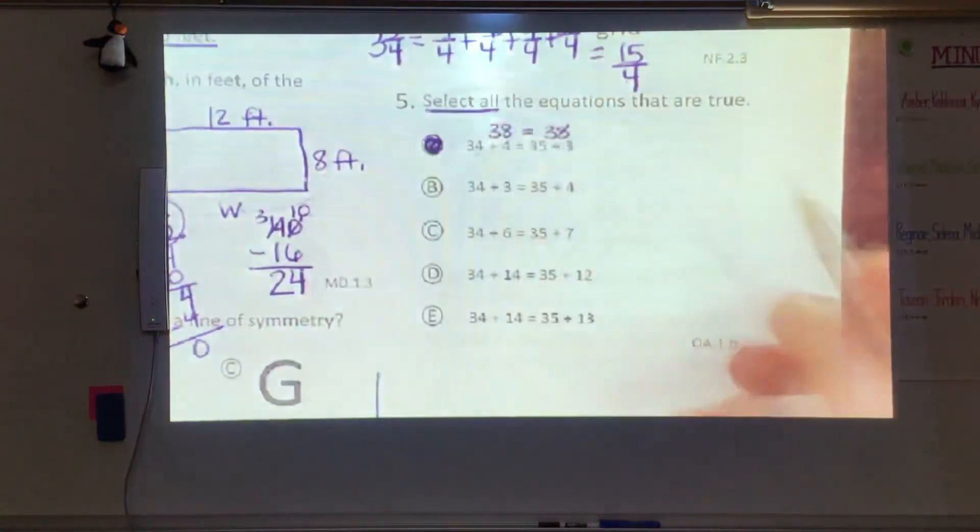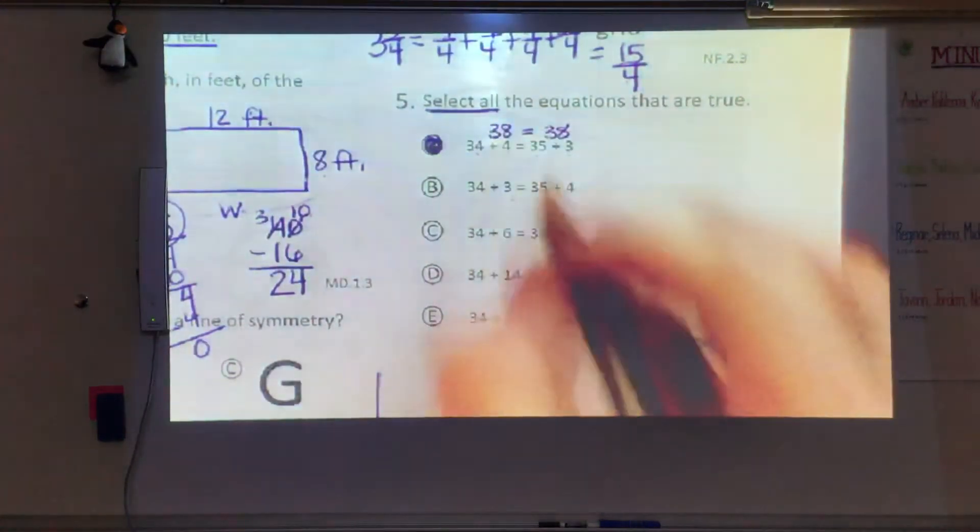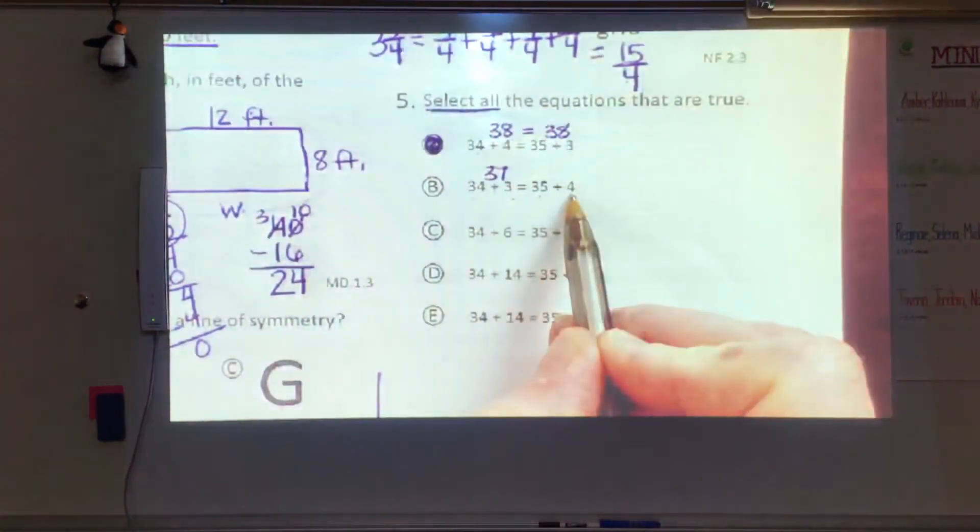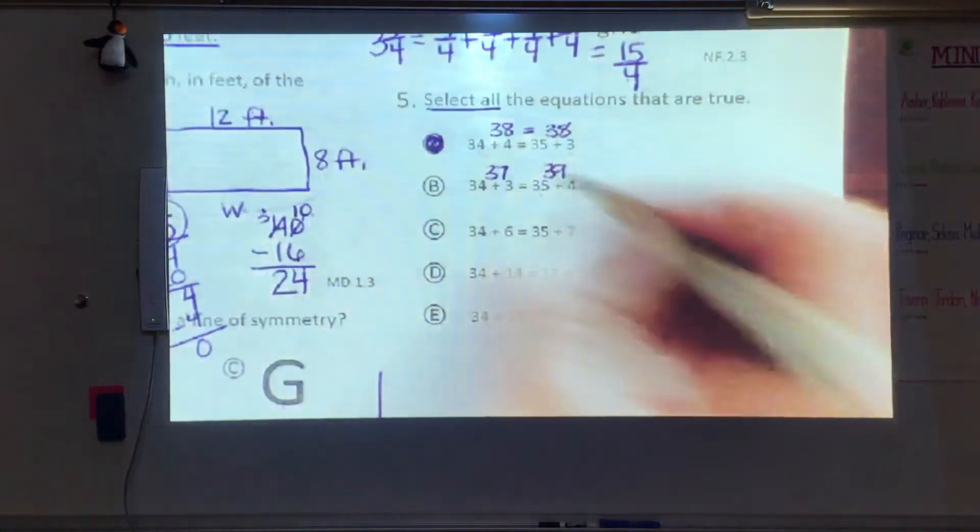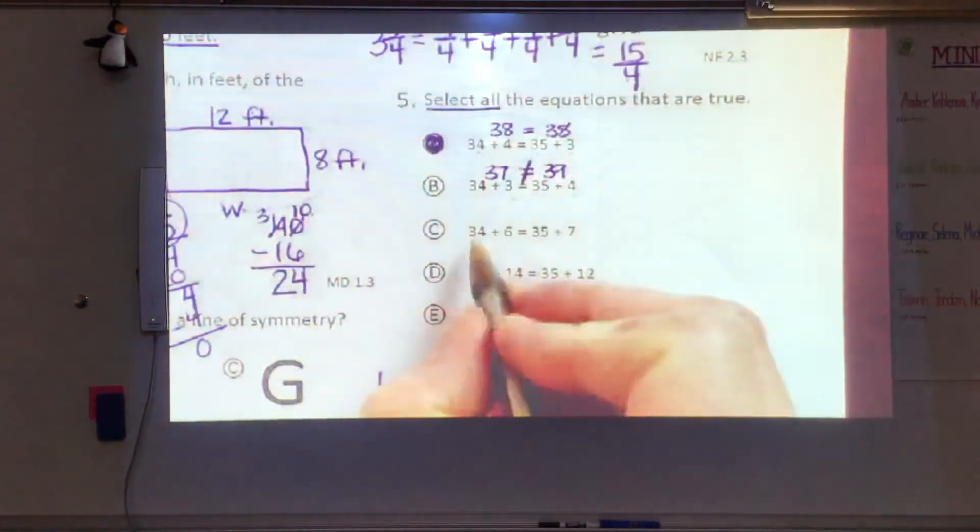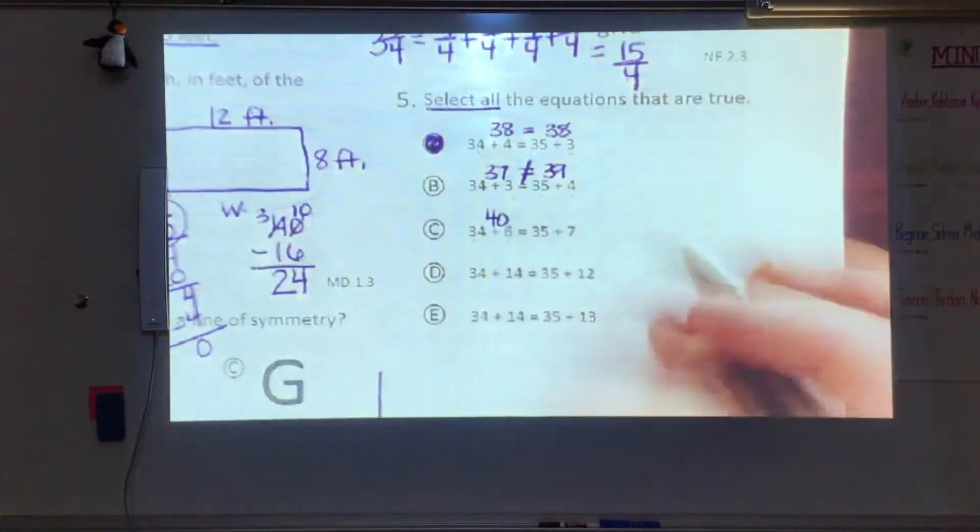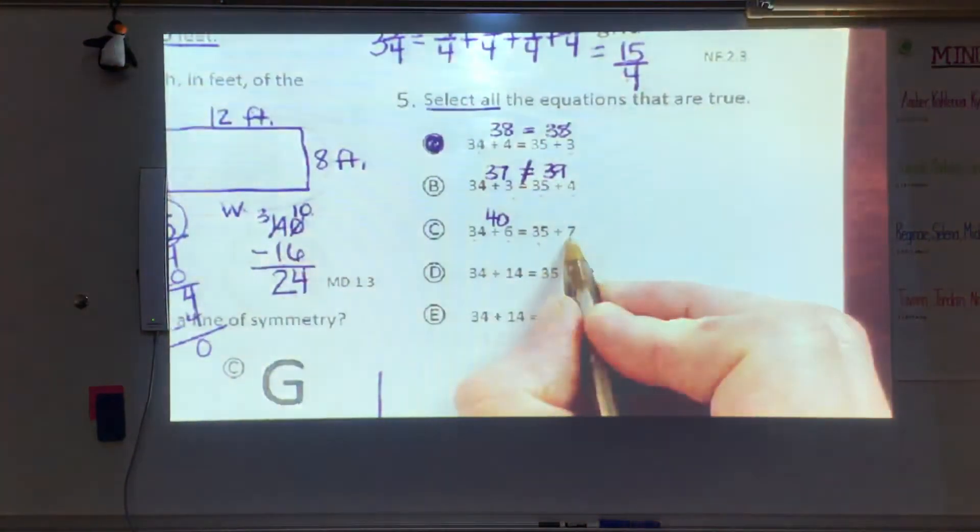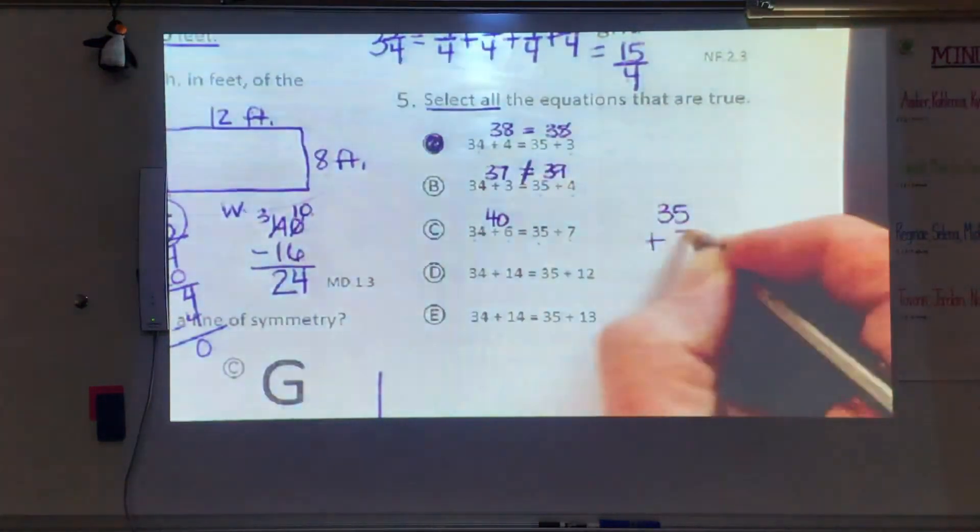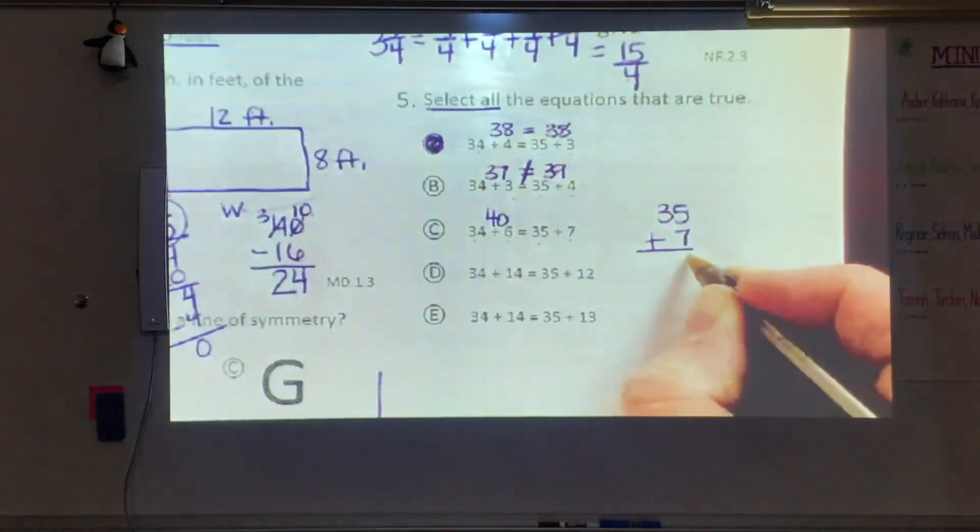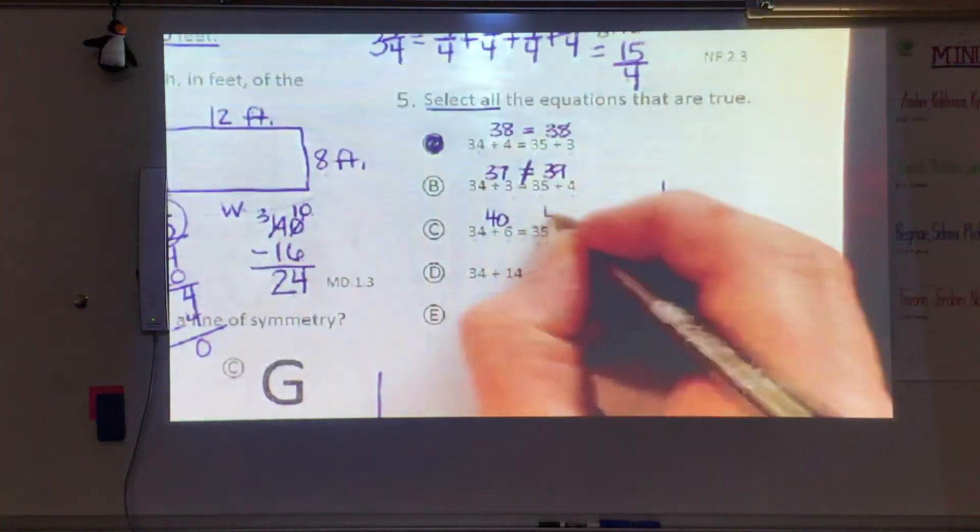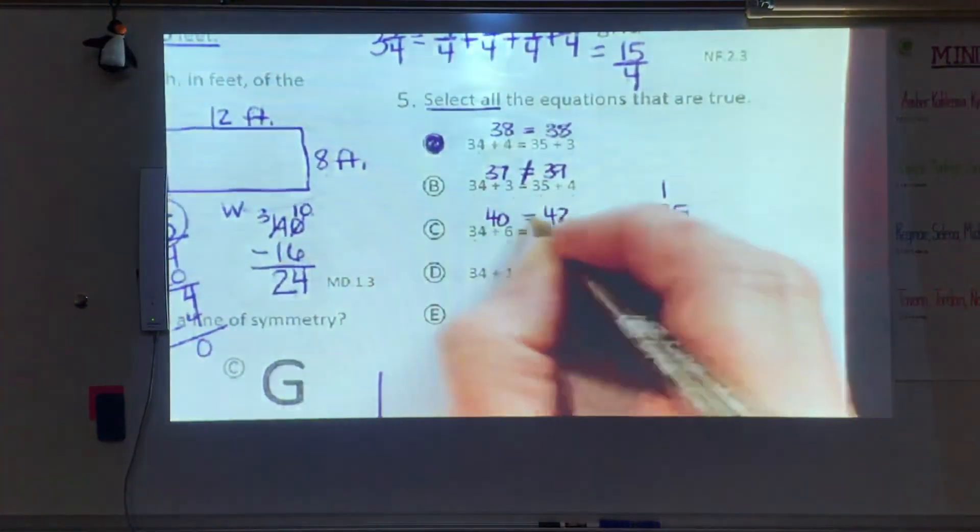34 plus 3 is 37. 35 plus 4 is 39. And those are not equal. 34 plus 6 is 40. 35 plus 7 is going to be 42. But let's do it over here on the side just to make sure. 7 plus 5 is 12. And 3 plus 1 is 4. So that is 42. Those are not equal.